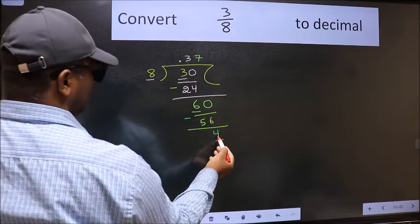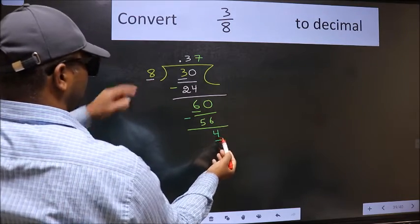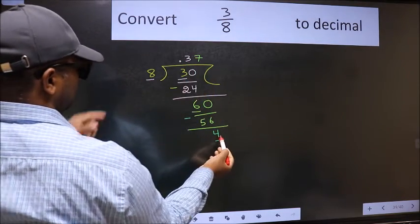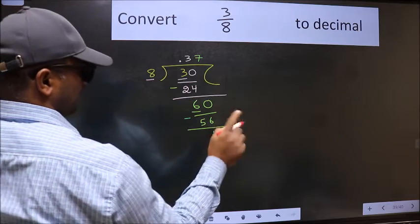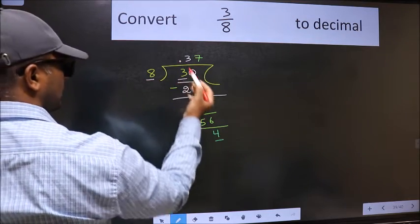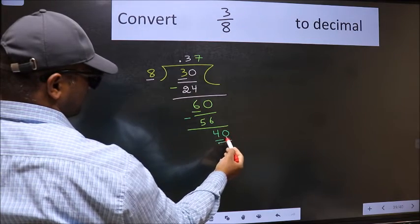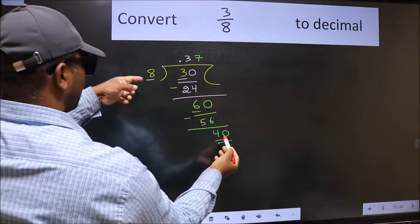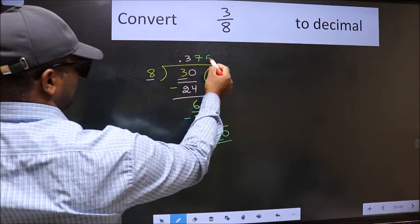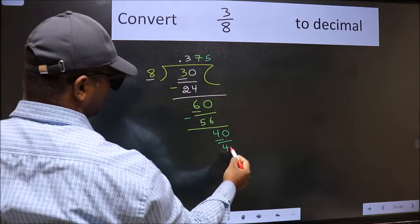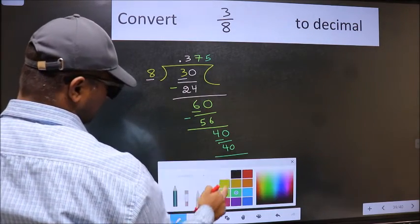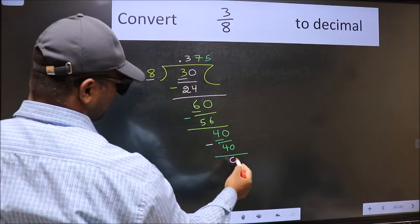Now here we have 4 and here 8. 4 is smaller than 8, and we already have the decimal, so we can directly take 0. So, 40. When do we get 40 in the 8 table? 8 times 5 is 40. Now we should subtract. We get 0.